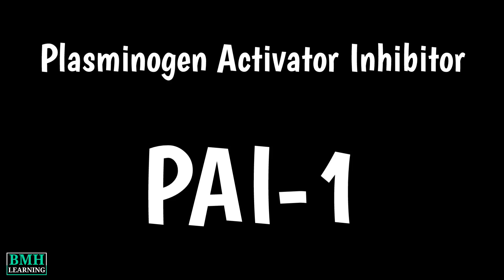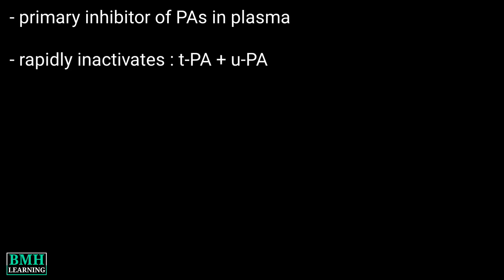Welcome to BMH Learning. This video is about plasminogen activator inhibitor 1, or simply PAI-1. PAI-1 is the primary inhibitor of plasminogen activators in plasma. It rapidly inactivates both tissue plasminogen activator and urokinase-type plasminogen activator.